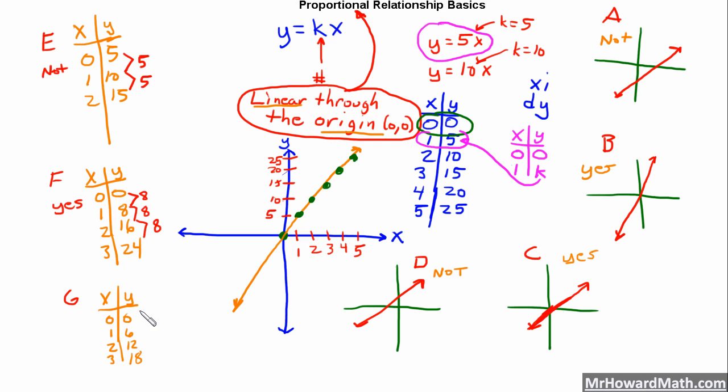Here, we've got the origin. We've got zero, zero in there. So that's good. Let's see if it's linear. We have zero to six, which is six. We've got six to twelve, which is six. We've got twelve to eighteen, which is also six. So, we've got a constant rate of change here. So, therefore, it's linear. We've got zero, zero, so it's through the origin. So, yes, this one is proportional.